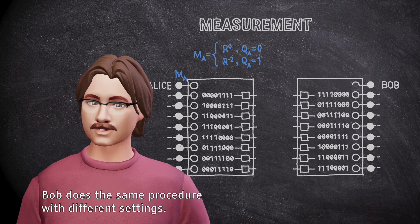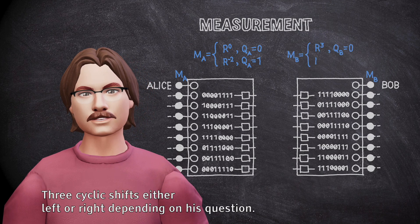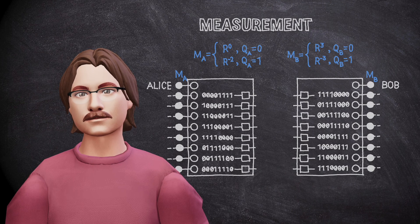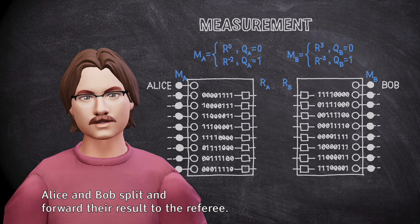Bob does the same procedure with different settings. Three cyclic shifts either left or right depending on his question. Alice and Bob split and forward their result to the referee.